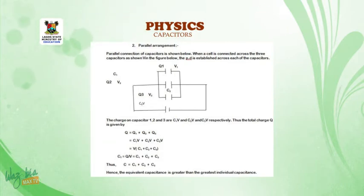Going through the above equation, the charge on capacitor 1, capacitor 2, and 3 are C1V, C2V, and C3V respectively. Thus, the total charge Q is given by Q is equal to Q1 plus Q2 plus Q3, which will be given by C1V plus C2V plus C3V. If you bracket V outside, you now have V into bracket C1 plus C2 plus C3, and that is the formula for equivalent capacitor arranging parallel. Hence, the equivalent capacitance is greater than the greatest individual capacitance.